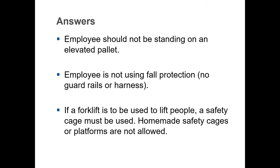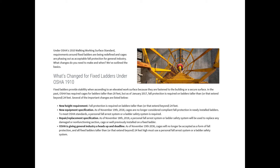Regarding ladders: new OSHA rules are phasing out cages on fixed ladders taller than 24 feet. As of November 19, 2018, cages are no longer considered compliant fall protection on newly installed ladders — a personal fall arrest system or ladder safety system is now required. Existing installations have until November 19, 2036, to comply. Contact your safety manager with questions; this is in play but there is plenty of time to address it.